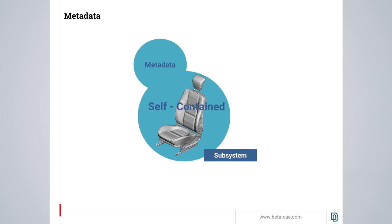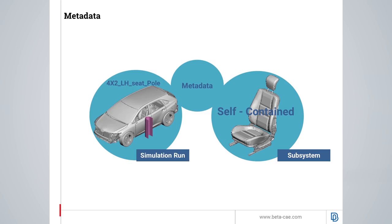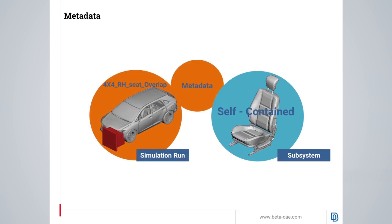This results in having the subsystem as a self-contained file. The subsystem can now be used in different model variants by just using different range IDs and different positions for the seat. Metadata are essentially the information that characterize the existence of a subsystem in the solution of a simulation run for each model variant.